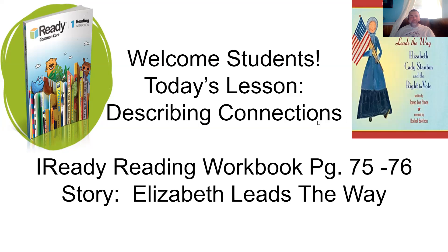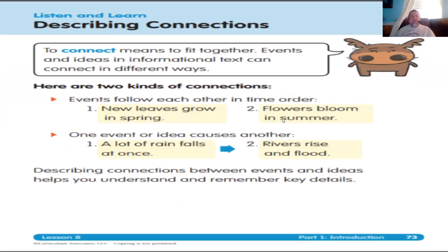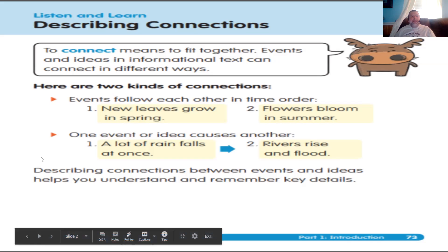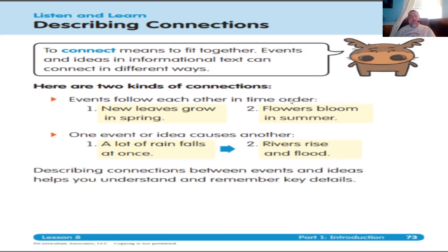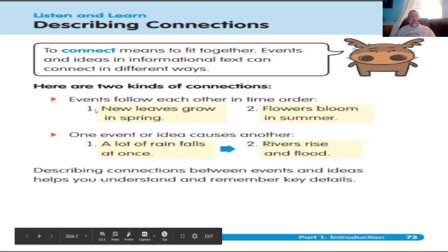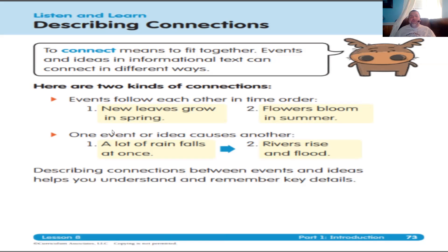Let's quickly review what we went over yesterday on describing connections. To connect means to fit together — events and ideas in informational text can connect in different ways. There are two types of connections. The first type is when events follow each other in time order. Time order is the sequence of events that happens from a starting point, following one after the next. For example: new leaves grow in spring, then flowers bloom in summer.